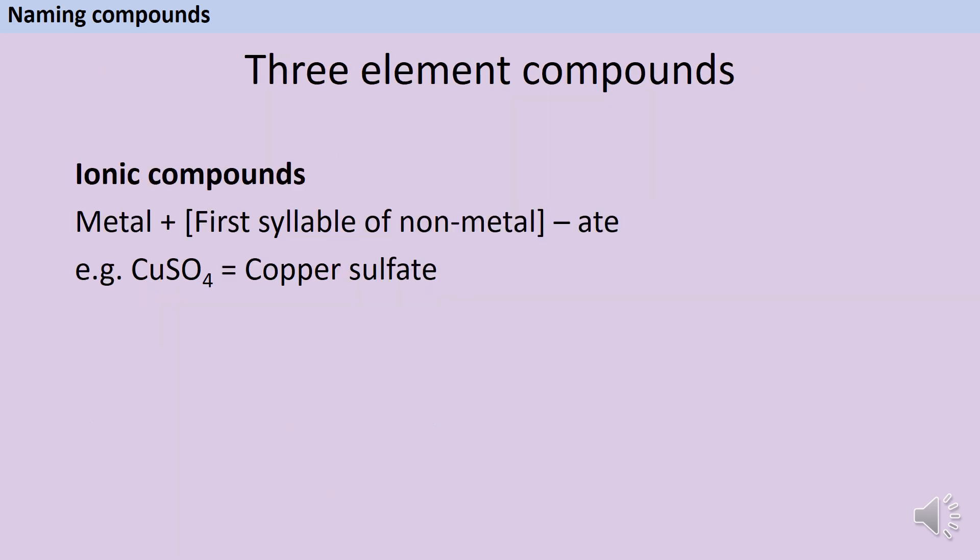There's also a straightforward way to name ionic compounds that contain three elements, as long as the third element is oxygen. Before, we had the name of the metal, the first syllable of the non-metal, and then ide. If we have a third element, and that third element is oxygen, instead of ide, we're going to have ate. So here we have copper, sulfur, and oxygen forming copper sulfate.